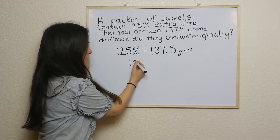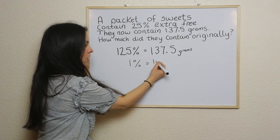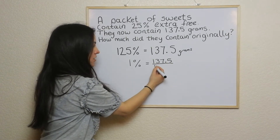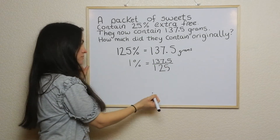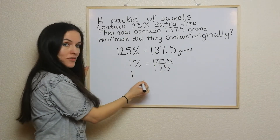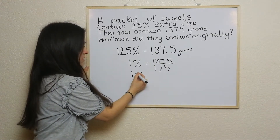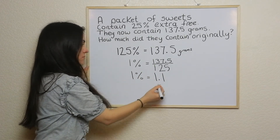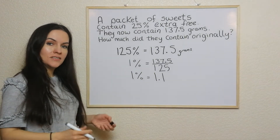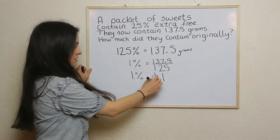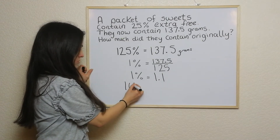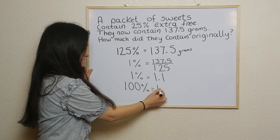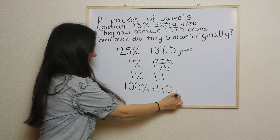So 1% is equal to 137.5 divided by 125, and when I work this out on a calculator — which you would need to do — 1% is 1.1. To get the full thing, we just times this by 100, which gives us 110 grams.